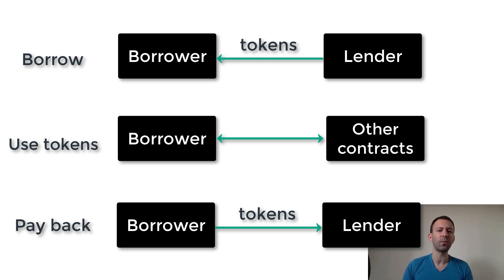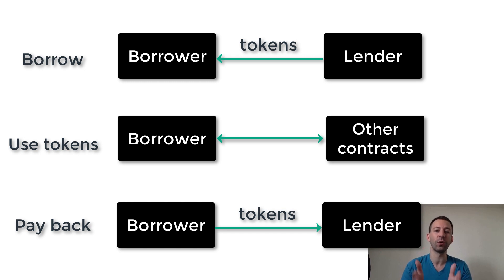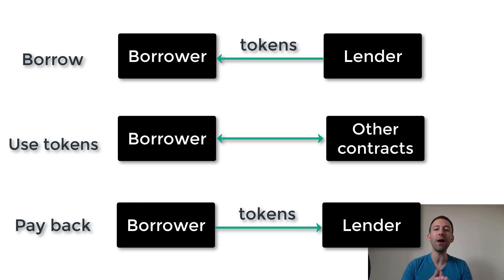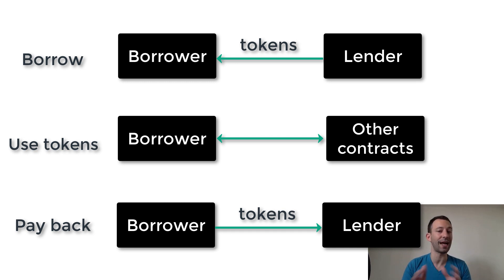You might think, what is so revolutionary about this? Well, two things. First, it all happens in a single transaction, and second, there is absolutely no collateral involved, unlike lending protocols like Compound. If you don't reimburse the loan in the same transaction, the smart contract of the lender is going to throw an error and cancel the whole transaction. That's how lenders can protect themselves even if there is no collateral.